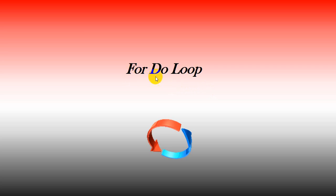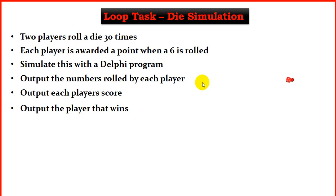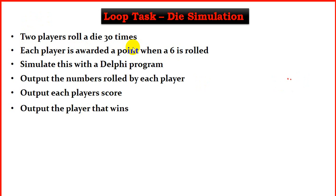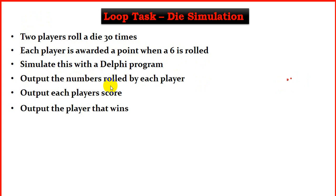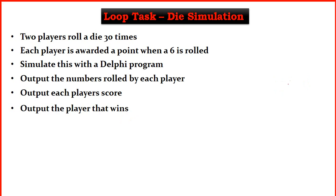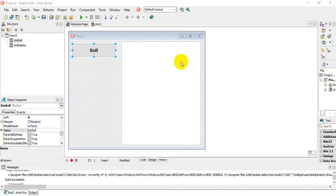Today we're going to be looking at the for-do loop. We're going to work on a task that requires us to use the for-do loop. The task is: simulate two players rolling a die 30 times each. A player is awarded a point when a six is rolled. We need to output the numbers rolled by each player, each player's score, and the player that wins.